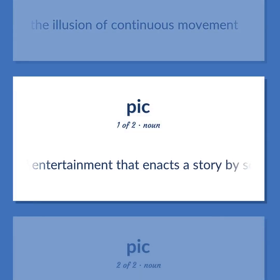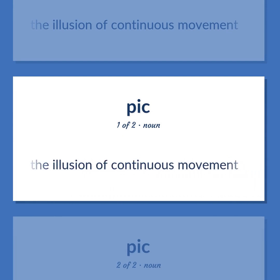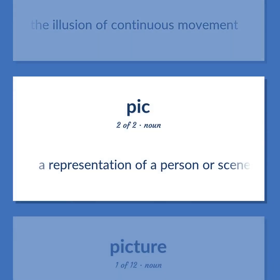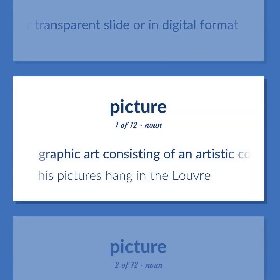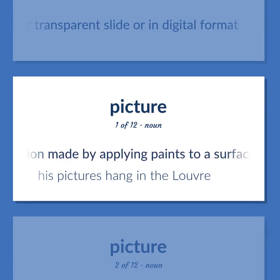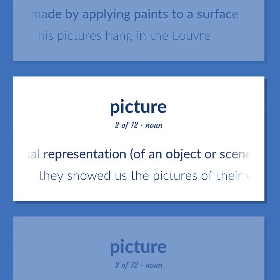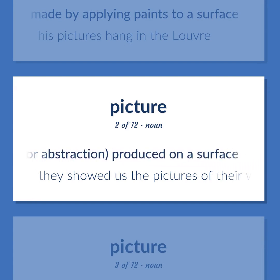Picture (noun): A representation of a person or scene in the form of a print or transparent slide or in digital format. Also, graphic art consisting of an artistic composition made by applying paints to a surface. Example: His pictures hang in the Louvre. A visual representation of an object or scene or person or abstraction, produced on a surface. Example: They showed us the pictures of their wedding.